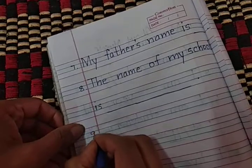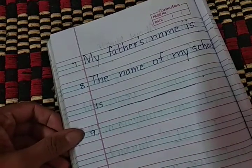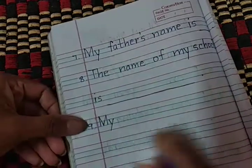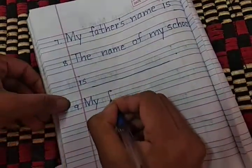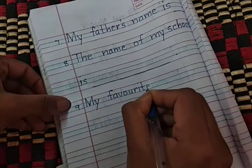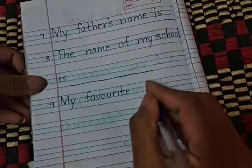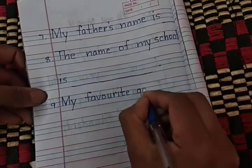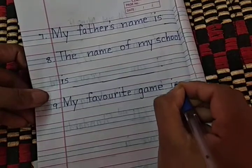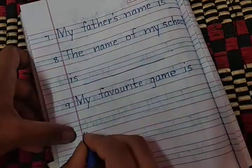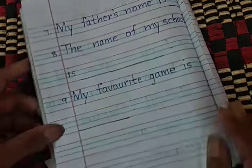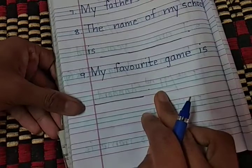The ninth sentence is your favorite game. Write M capital, Y small — 'my' — give a space, then F-A-V-O-U-R-I-T-E — 'favorite' — give a space, then G-A-M-E, give a space, then I-S in small. My favorite game is dash. Whatever your favorite game is, write it in the blank space and give a full stop.